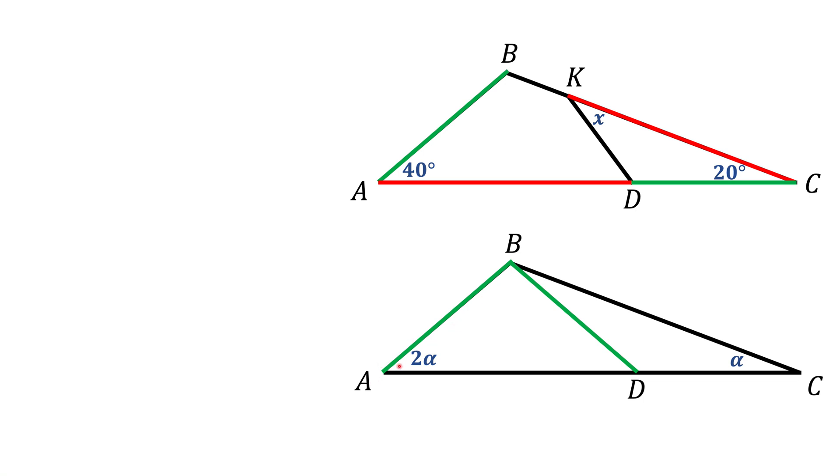In this case ABD is an isosceles triangle. Angles at the base should be congruent, so this angle D should be 2 alpha. This angle 2 alpha is an external angle to triangle BDC. One of the angles in that triangle is alpha, and it's not difficult to show that the other angle, namely this angle B, also has to be alpha.